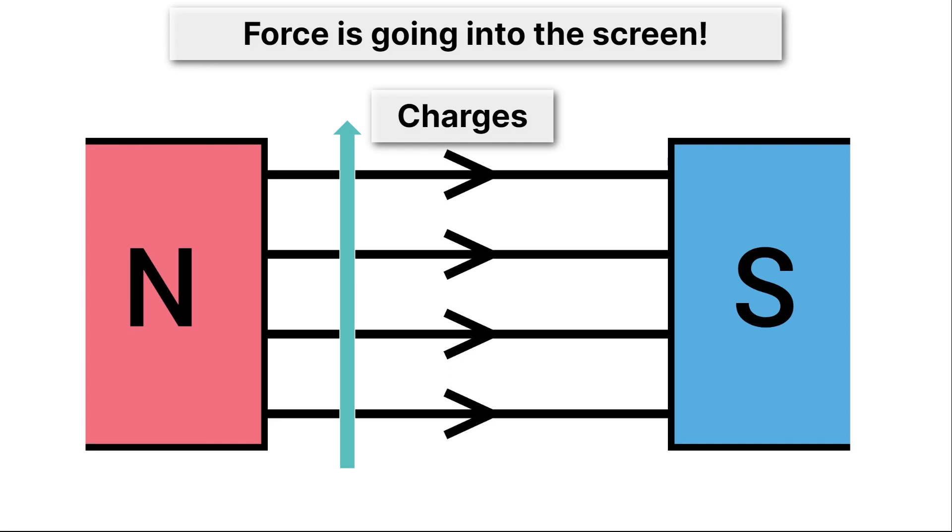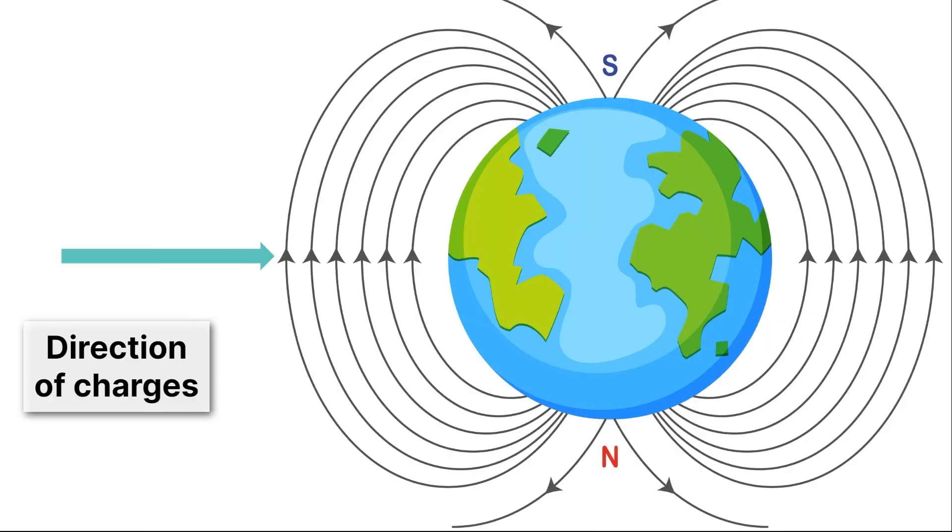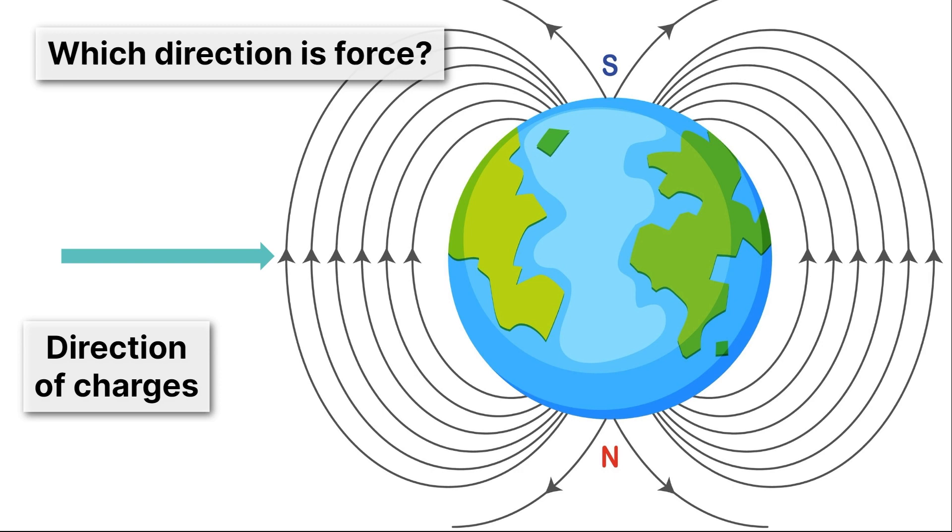So hopefully you're tracking along with this right-hand rule. If you're still confused, I would recommend rewinding and watching the last three or four minutes. Here we have the magnetic field of the Earth, and charges come straight at the magnetic field. We're going to now use the right-hand rule to determine what direction is force. What direction is the magnetic field of the Earth going to push on these charges? Pause the video and see if you can figure out the direction of the force.